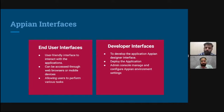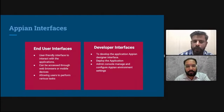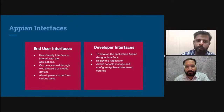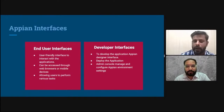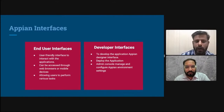End user interfaces can be accessed through a web browser or mobile devices. Appian has a mobile app available on Android and Apple app stores. End users can perform tasks like creating a request, completing assigned tasks, reviewing records, checking reports, and accessing sites. These interfaces are for real business users who use the application.